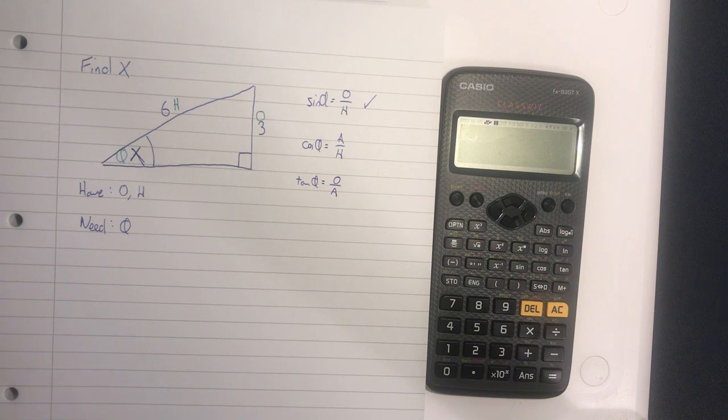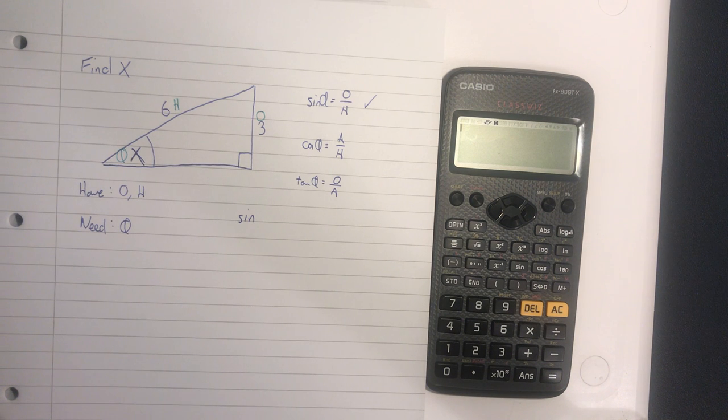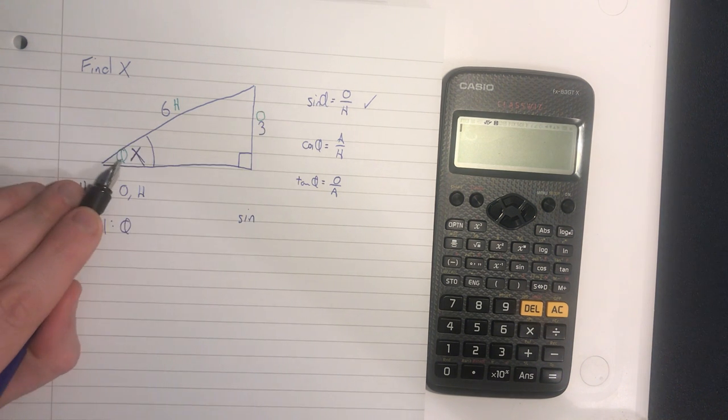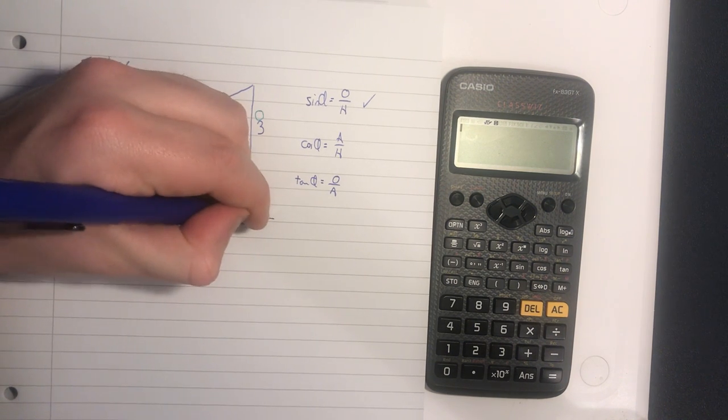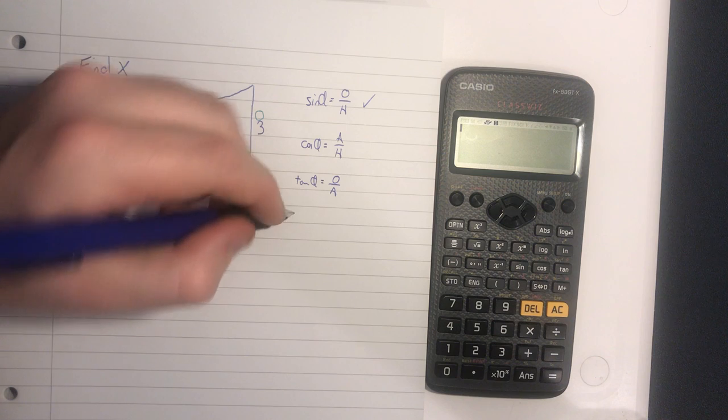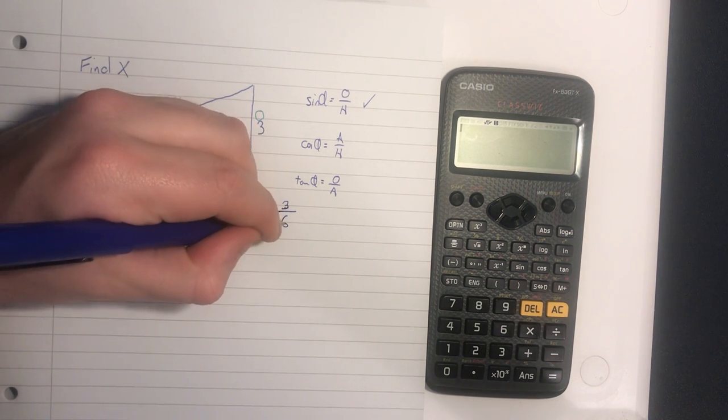So we write sine and start filling in what we know. We know our theta - in our case, theta is X - so we put in an X, then it's equals. O is 3 and our H is 6.